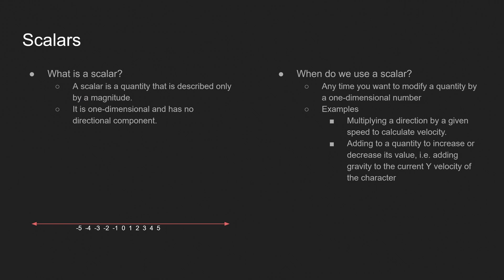So what's a scalar? Scalar sounds like something super complicated. It's really not. A scalar is just a quantity that's only described by a magnitude. It's one-dimensional and it has no directional component. So if you remember from school, there's a little diagram of a number line down here. Any number that you could find on this number line would be considered a scalar.